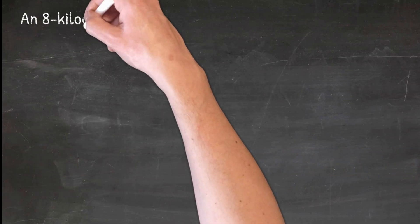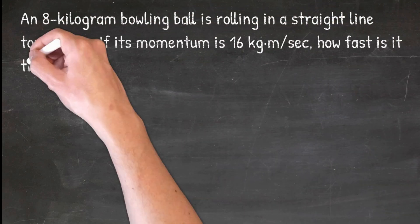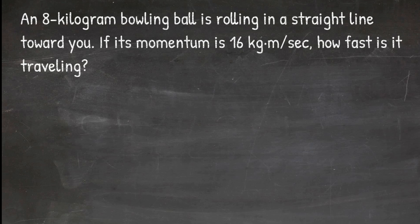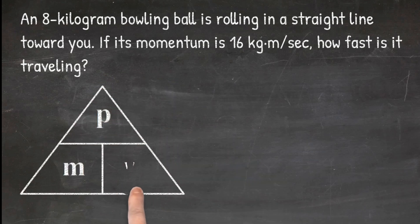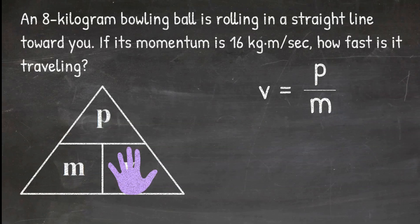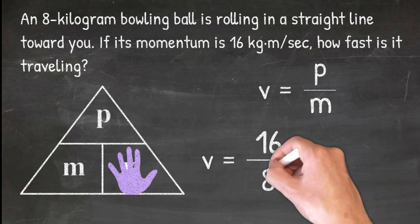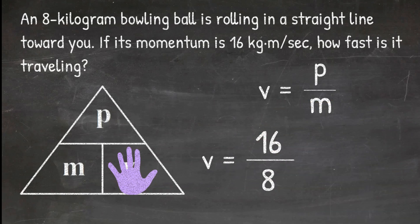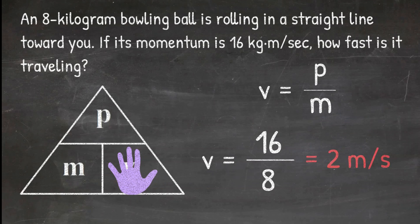In the final example, the question says: an 8-kilogram bowling ball is rolling in a straight line toward you. If its momentum is 16 kilograms times meters per second, how fast is it traveling? I cover up the letter v in my triangle, which tells me to do momentum divided by mass. So v equals p divided by m: I plug in 16 divided by 8, which gives me a final answer of 2 meters per second.